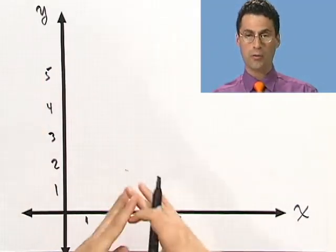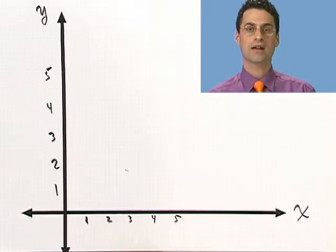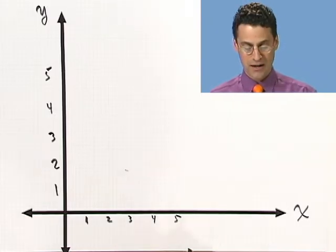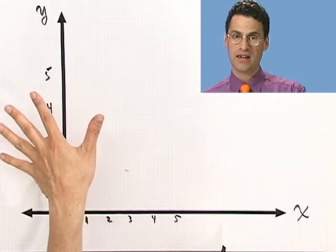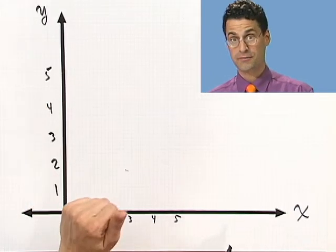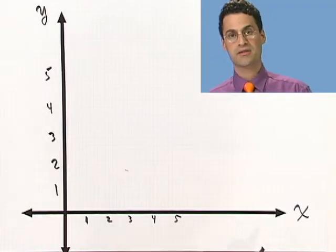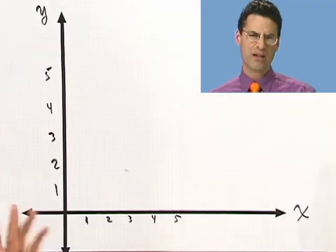And actually, the whole plane, this whole Cartesian plane, is actually broken up into four quadrants. And this is called the first quadrant, where everybody's positive. The second quadrant is where the x's are negative, but the y's are still positive. The third quadrant is a very negative space. Everybody's negative there. And the fourth quadrant's a little bit happier, because the x's are positive, but now the y's are negative. OK, we'll talk more about that later.